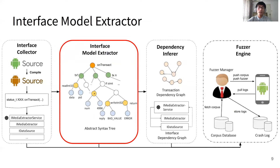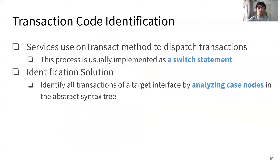The interface model extractor extracts the interface model based on the abstract syntax tree of the interface. When extracting the interface model, we should identify all of the transactions and their input and output variables. We also extract other information such as enumeration definitions. For transaction code identification, we observe that services use the onTransact method to dispatch transactions, and this process is usually implemented as a switch statement. So we can identify all transactions over a target interface by analyzing case nodes in the abstract syntax tree.